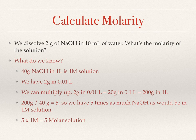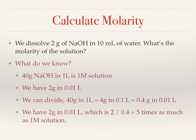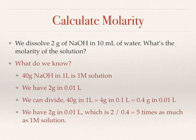We could also calculate by dividing. We know 40 grams in 1 litre is 1 molar, so 4 grams in 0.1 litre is also 1 molar, and 0.4 grams in 0.01 litre is 1 molar. We have 5 times as much sodium hydroxide in this 0.01 litre, so it must be a 5 molar solution. Personally I think it's easier to multiply up than to divide.